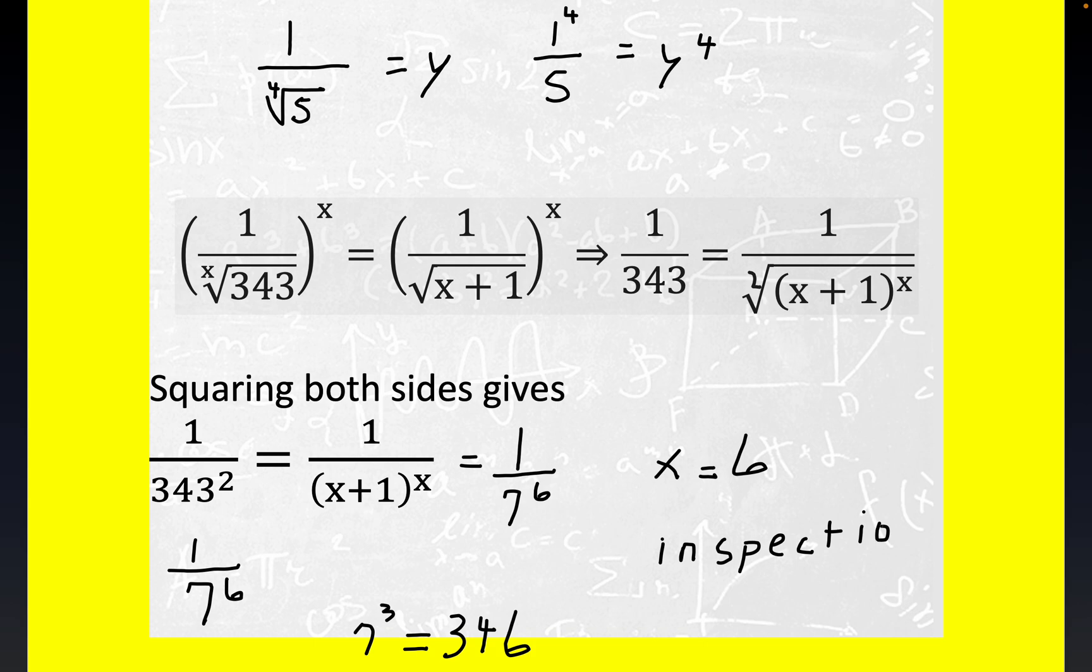They don't want you to just guess really. But if you get to this stage, it's very clear that x equals six satisfies. Six plus one is seven, and then seven to the sixth power, there you go. So x equals six is a solution.